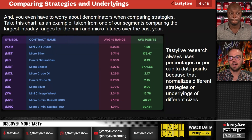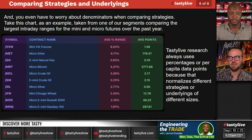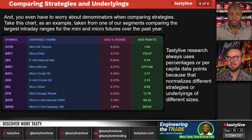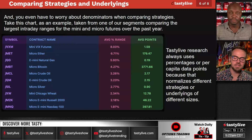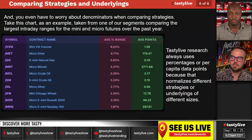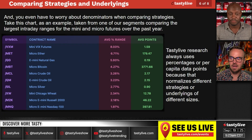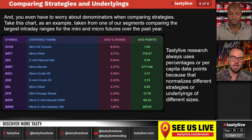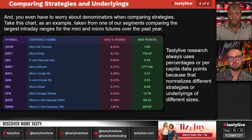Comparing strategies and underlines: when comparing strategies, take this chart as an example comparing the largest intraday ranges for the mini and micro futures over the past year. We always use percentages or per-capita data points because that normalizes different strategies or underlines of different sizes. What does 'I made $500 bucks' or 'I doubled my account' actually mean from a percentage standpoint? All of these products have different notional values and tick sizes, so bringing it down to a percentage basis helps us put context around the implied and realized volatility of the products we're trading. These average ranges also tend to grow once volatility gets wider and crazier.